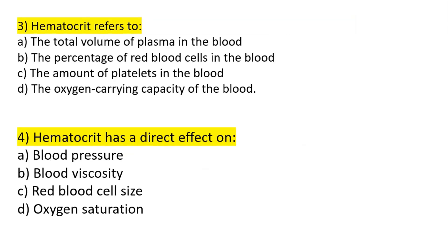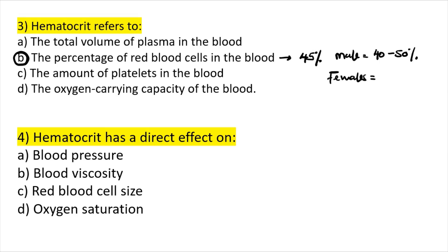Question three: hematocrit refers to the percentage of red blood cells in the blood — this is correct. Hematocrit is 45 percent on average. It differs between sexes: in males it is 40 to 50 percent, and in females it is 37 to 48 percent.